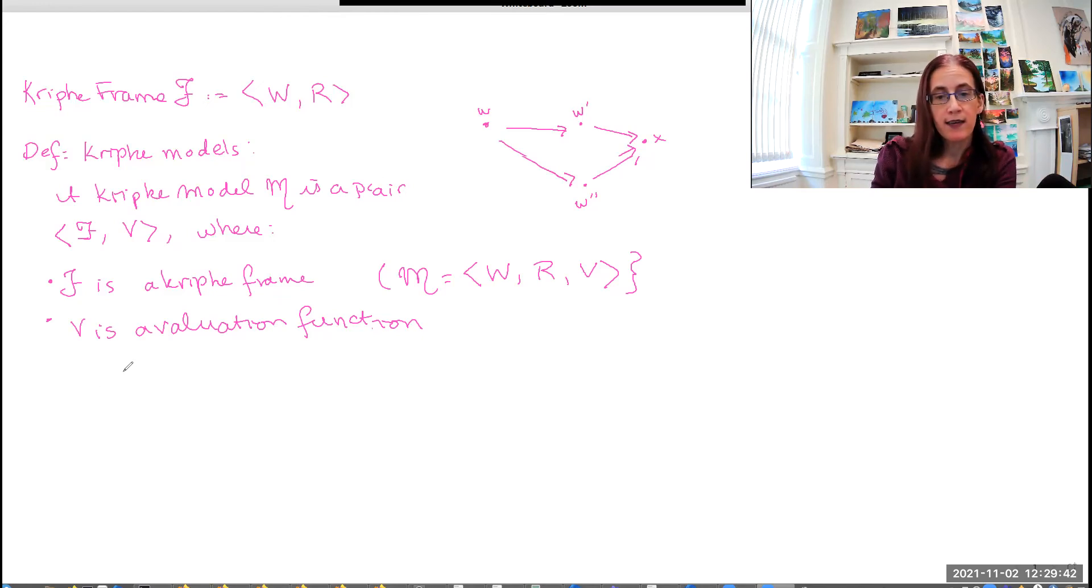And what we can say is that formally, V takes the cross product of our set of propositions P and set of worlds W, and they go to the set containing true and false.